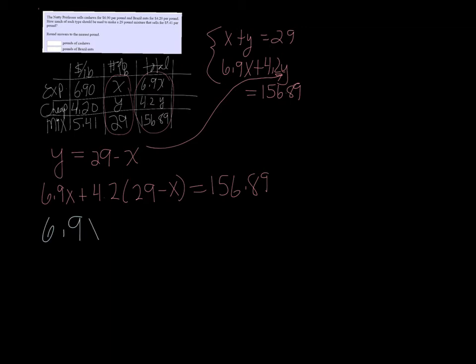So solving this, 6.9X, I need to multiply or distribute that 4.2. So 4.2 times 29 is 121.8, and then 4.2 times negative X is negative 4.2X equals 156.89. I can combine the two X's on the left side, so 6.9 minus 4.2 is 2.7X.